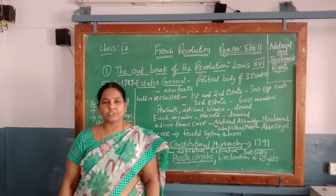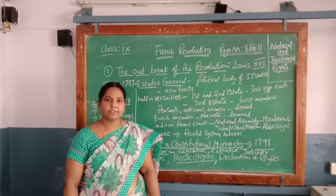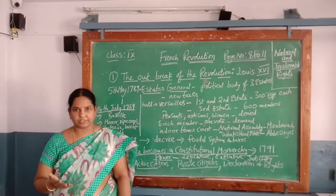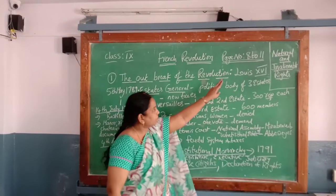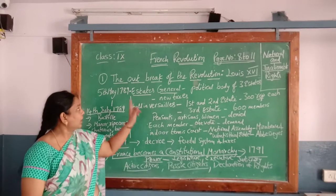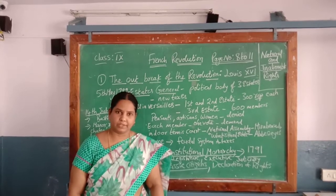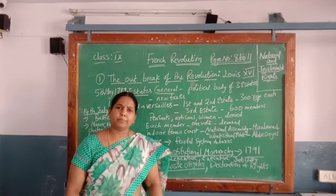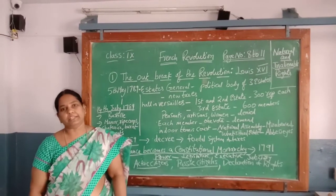In the previous session on the French Revolution, we learnt about the revolutionaries storming the Bastille, which is a fortress prison, and the circumstances that led them to do so. Today, from page number 8 to 11, we are going to learn about the immediate cause of the revolution — the outbreak of the revolution. There are several circumstances from the past, from centuries together, including the division in society and the tax structure that caused problems for the people of France before 1789, during the 18th century.